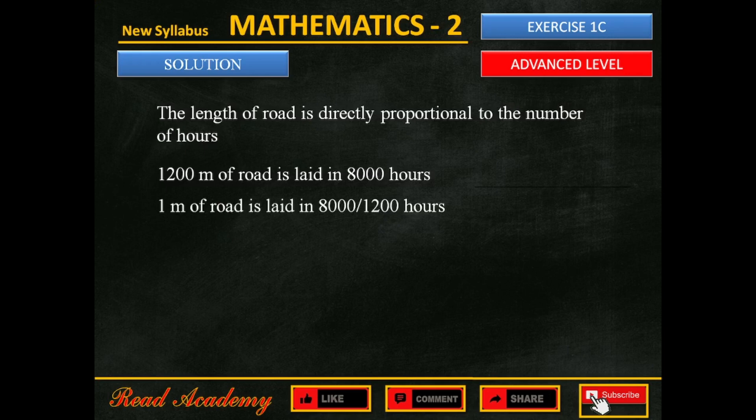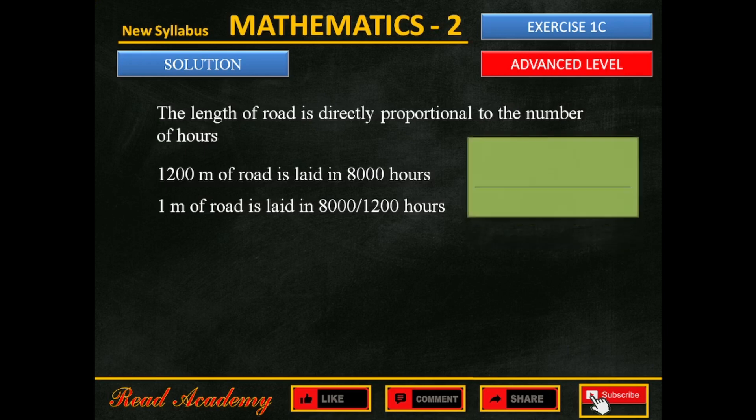Now, how long will it take to complete the remaining length of the road? To find this, first we need to know what's the remaining length. The total length of the road was 3,000. 1,200 meters is already completed, so the remaining length of the road is 1,800 meters.